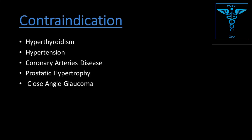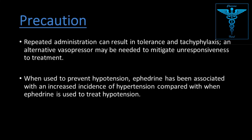Contraindications: hyperthyroidism, hypertension, coronary artery disease, prostatic hypertrophy, and closed-angle glaucoma. Precautions: Repeated administration can result in tolerance and tachyphylaxis, and an alternative vasopressor may be needed if unresponsive to treatment. When used to prevent hypotension, ephedrine has been associated with increased incidence of hypertension compared with phenylephrine when used to treat hypotension.